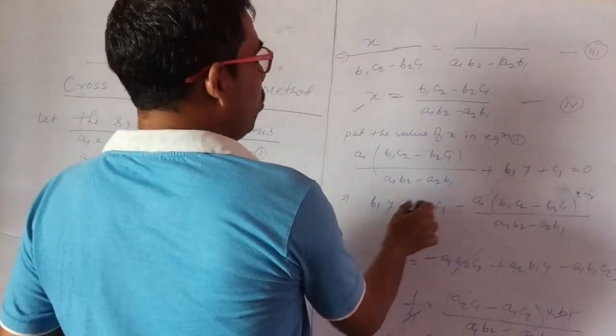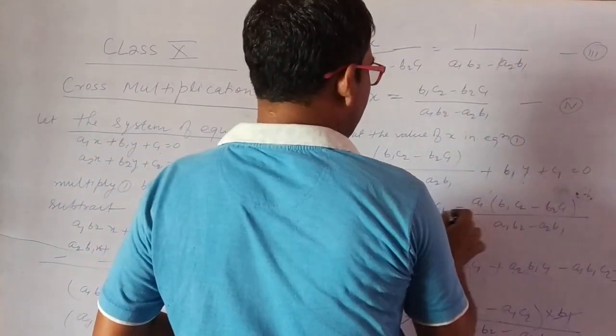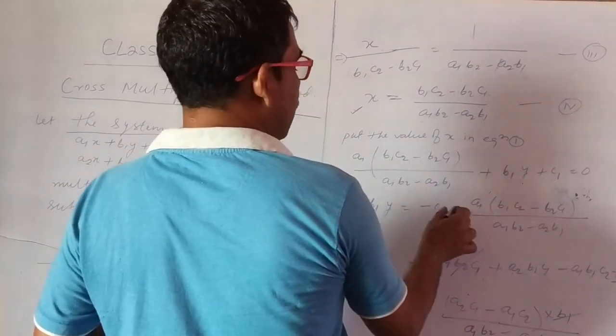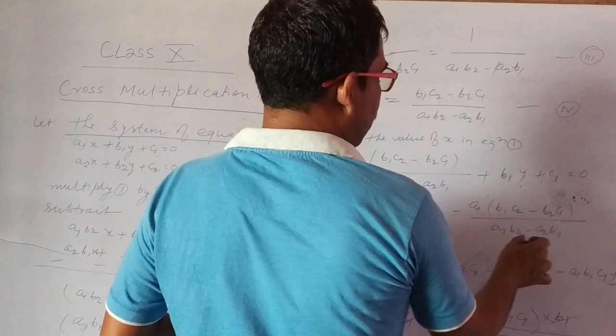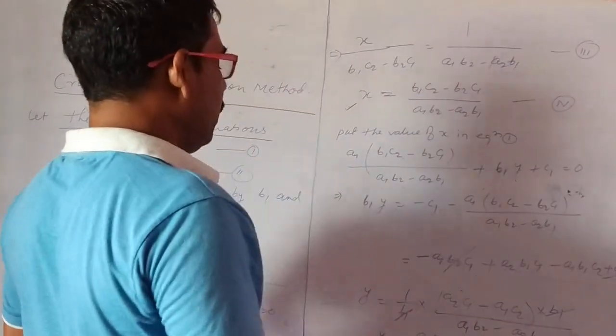b1y equal to, this transpose other side then minus c1, this transpose other side then minus a1 into b1c2 minus b2c1 by a1b2 minus a2b1. Solving this, then we get,